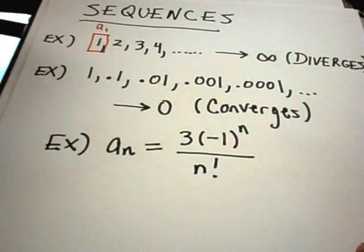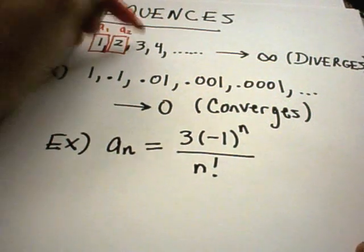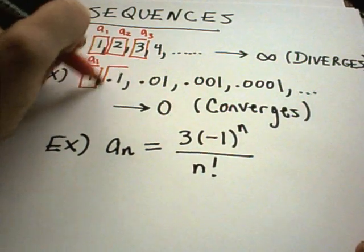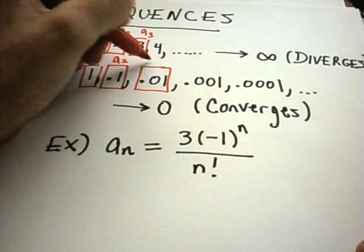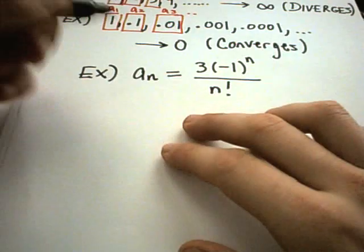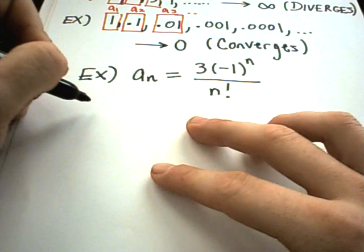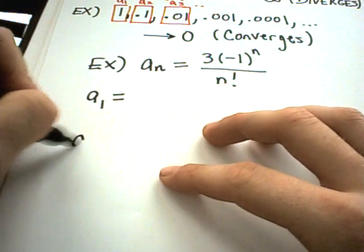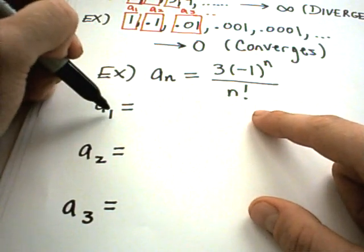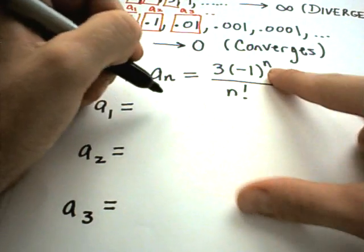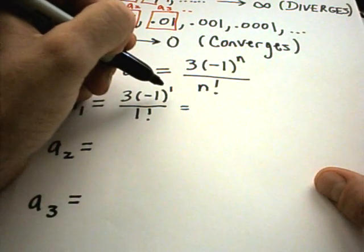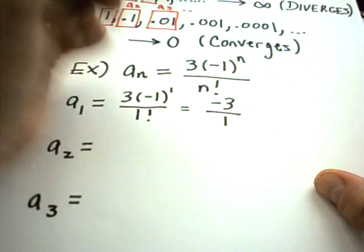In the first sequence, 1 is a_sub_1, 2 is a_sub_2, 3 is a_sub_3, etc. Let's write out the first three terms. For a_sub_1, replace n with 1: we get 3 times negative 1 to the first over 1 factorial. Negative 1 to the first is just negative 1, so we get 3 times negative 1 over 1, which equals negative 3.